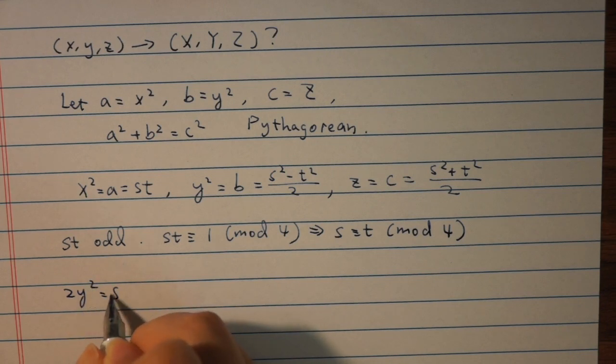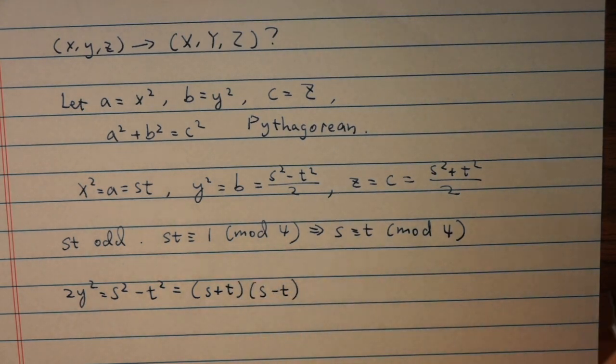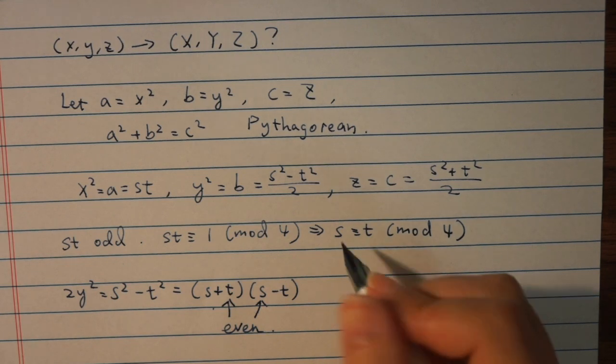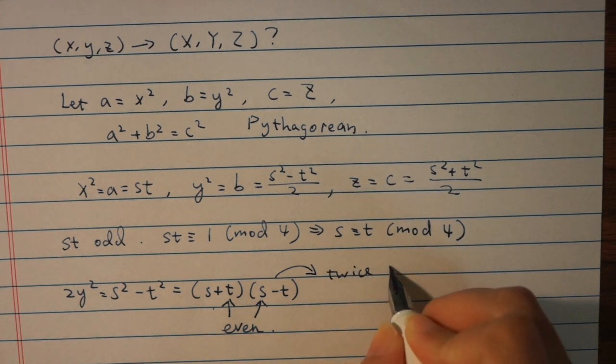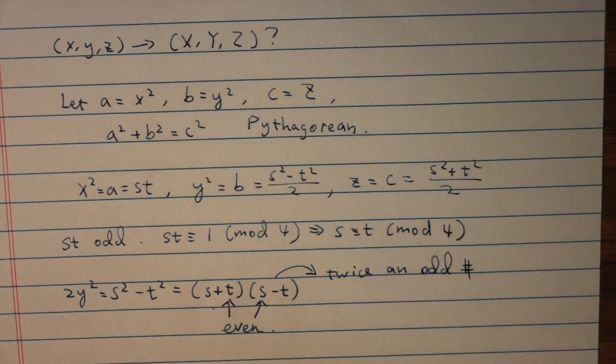Next, 2y squared equals s squared minus t squared, and that's equal to s plus t multiplied by s minus t. Since s and t are both odd, s plus t and s minus t are both even. s minus t is divisible by 4 since s is congruent to t mod 4.